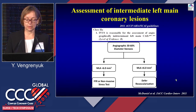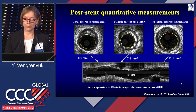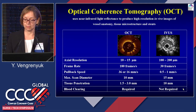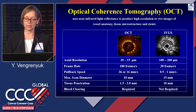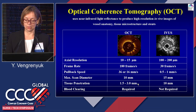A minimal lumen area of 6 mm² is the cutoff for non-ischemic lesions in left main disease. These are typical post-stent quantitative measurements by IVUS: minimal stent area and reference areas, which allow us to calculate stent expansion. We can also assess stent dissection or malapposition. Optical coherence tomography is a more recently developed imaging modality. Compared to IVUS, it has 10 to 20 times higher resolution and much faster pullback speed. However, tissue penetration is only 1 to 3 mm, which doesn't allow us to see the media layer at the site of most lesions.